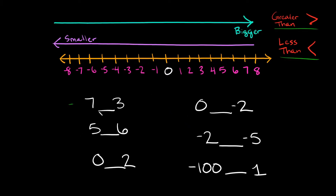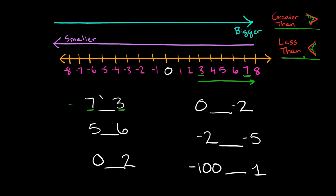Let's start with this first one. I have 7 and 3 — which number is bigger? Well, 7 is obviously bigger than 3 because it is further to the right on the number line. A little trick I always like to use is to draw teeth on these signs because they look like little mouths. These are hungry mouths and they want to eat the bigger number. So if we're looking at 7 and 3, we eat the bigger number — 7. You would read your answer as: 7 is greater than 3.